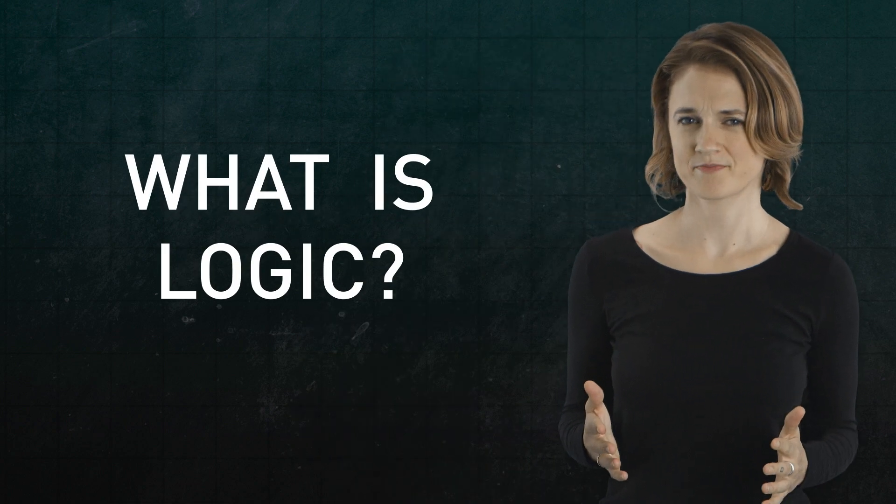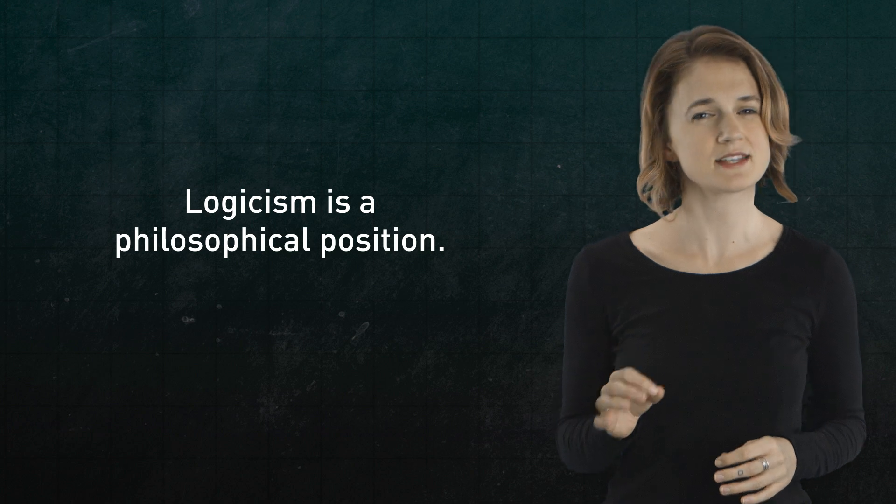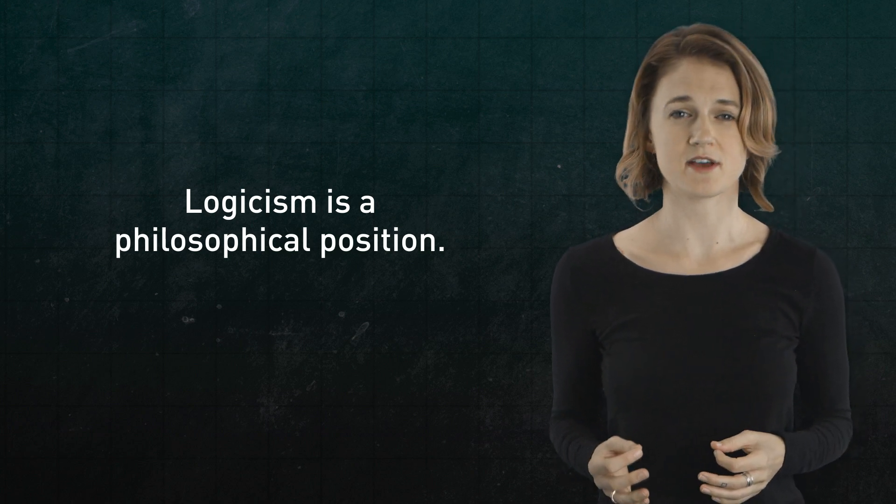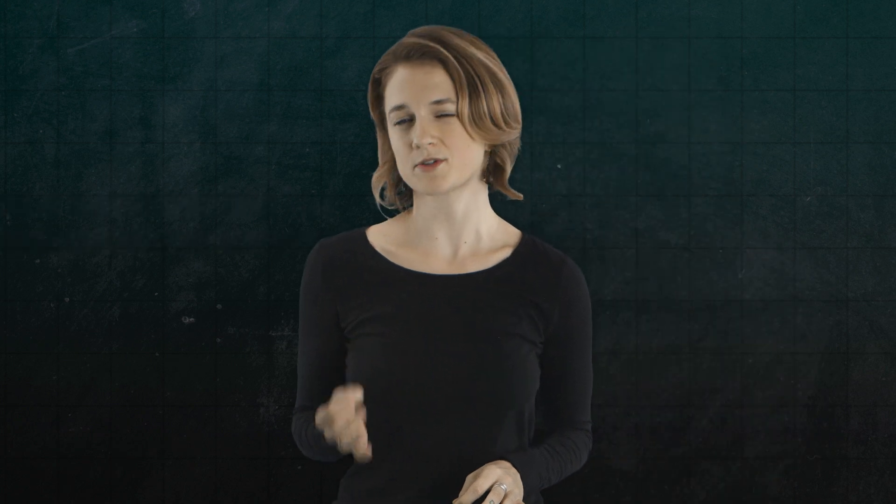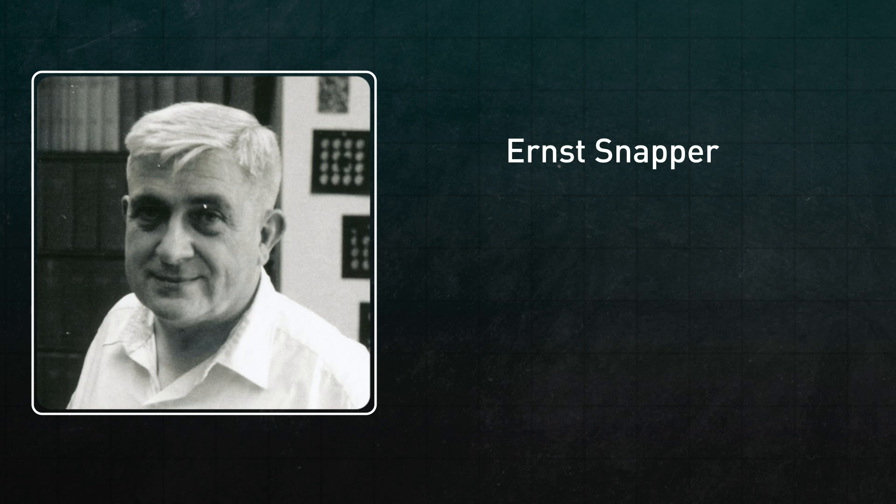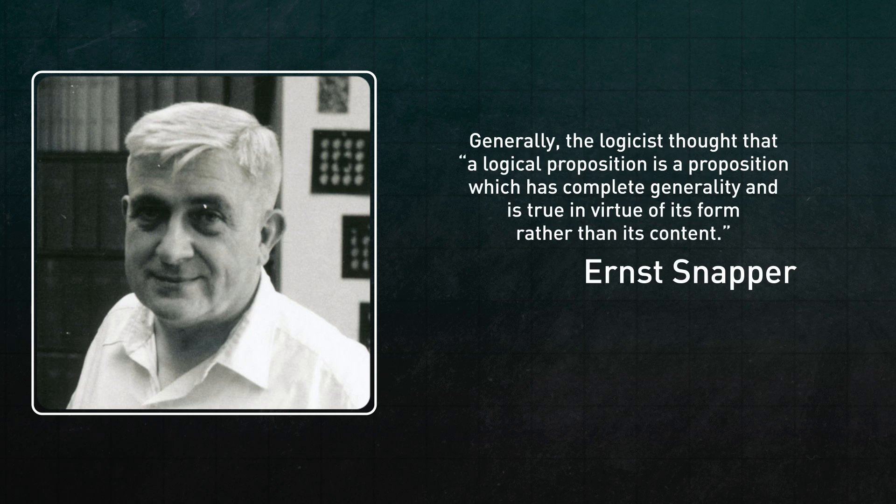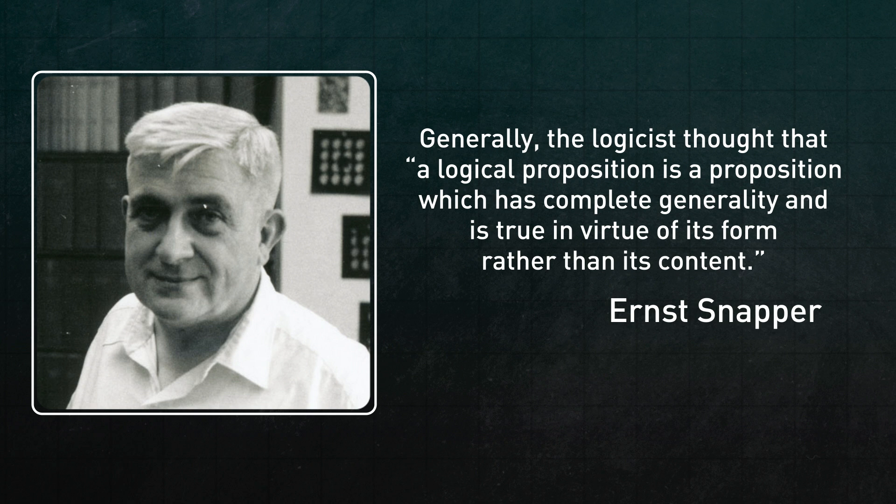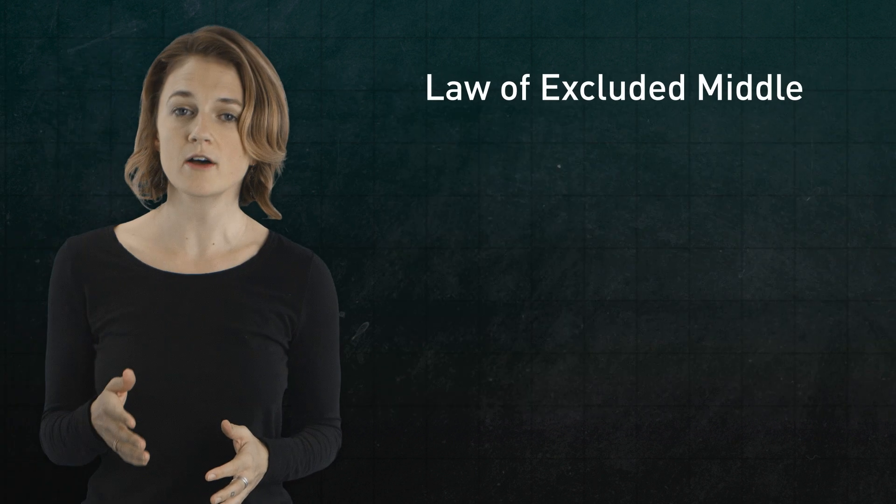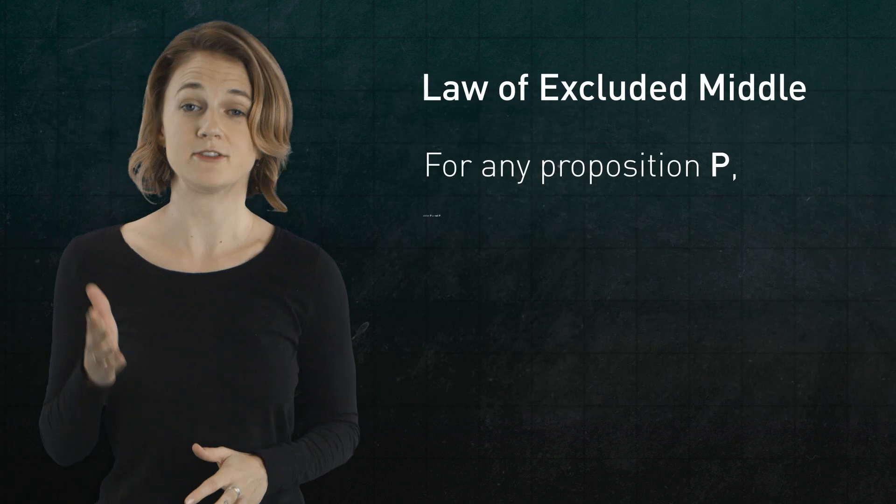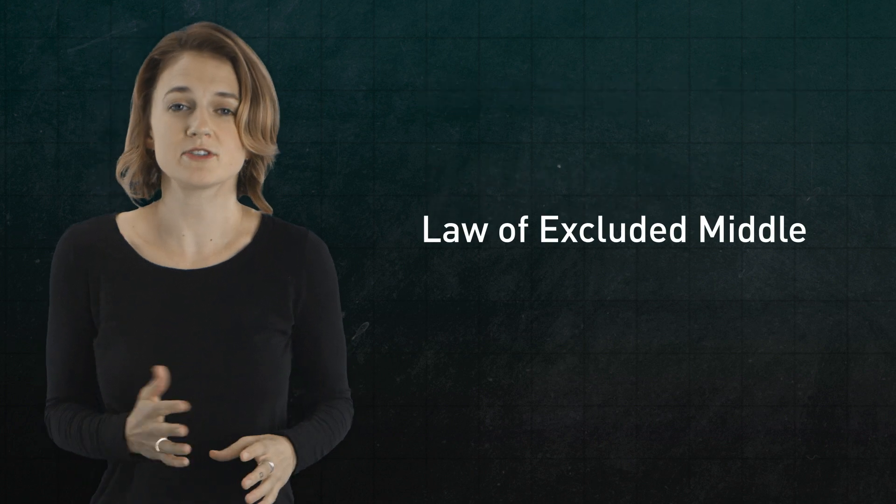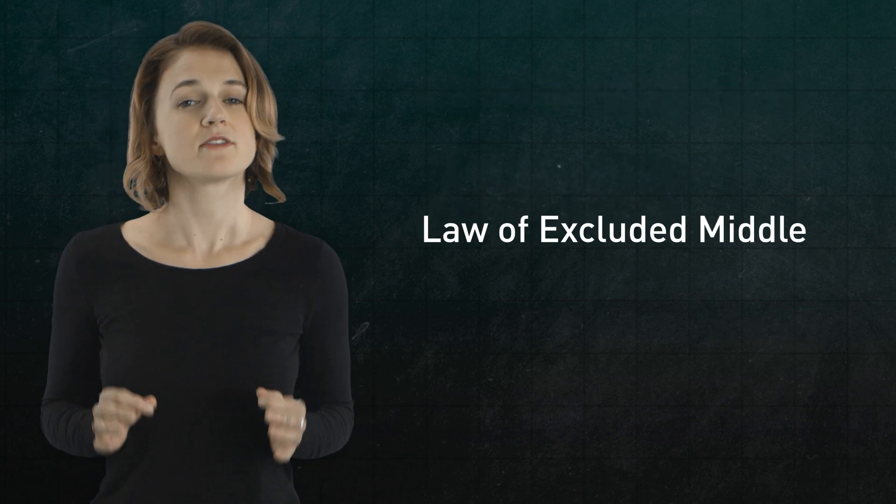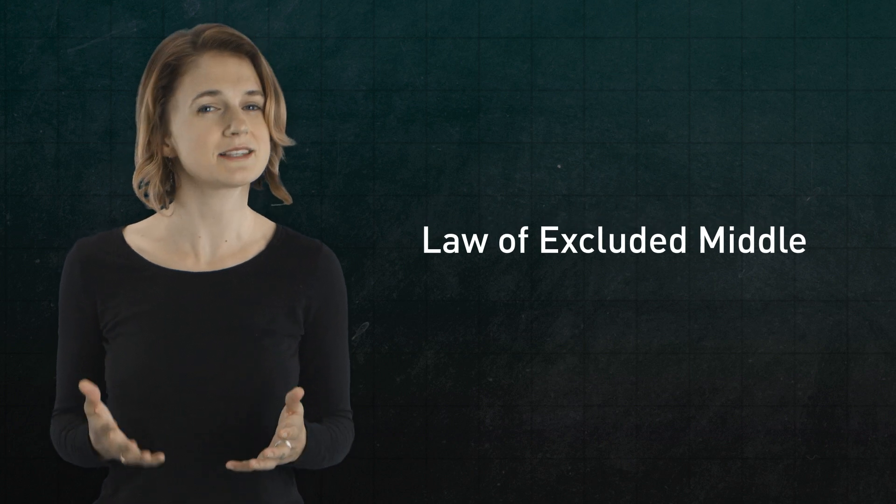This leads to some obvious questions like, what exactly is logic? Logicism is a philosophical position, and the intended meaning of the word logic is fundamentally philosophical and not mathematical. The definition is difficult to pinpoint and different for each logicist. But mathematician Ernst Snapper writes that, generally, the logicist thought that a logical proposition is a proposition which has complete generality and is true in virtue of its form rather than its content. For example, the law of excluded middle: for any proposition p, either p or not p. Logic should feel simple, natural, and never ad hoc. That's what allows it to ground mathematics, to sit at the base of the pyramid.